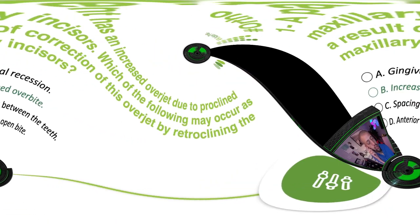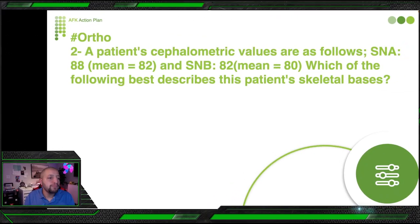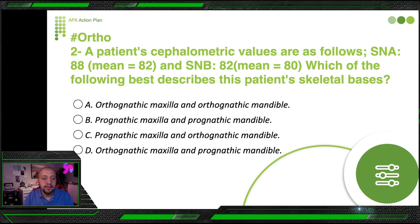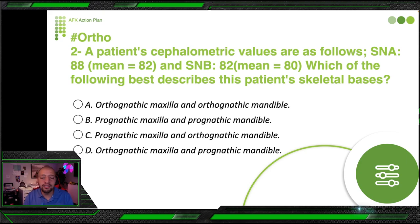Second question, also from ortho: a patient's cephalometric values are SNA = 88 (mean 82) and SNB = 82 (mean 80). Which of the following best describes the patient's skeletal basis? The options are: orthognathic maxilla/orthognathic mandible; prognathic maxilla/prognathic mandible; prognathic maxilla/orthognathic mandible; orthognathic mandible/orthognathic maxilla; and prognathic mandible.